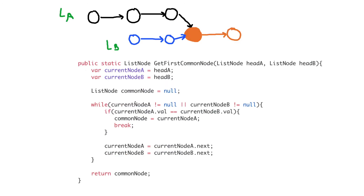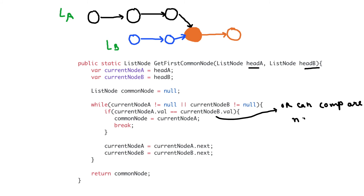Finally, in the function getFirstCommonNode, we provide the head nodes of both linked lists, traverse them at the same time, and check whether each pair of nodes is equal. Here we compare the node itself rather than just the value, and return that particular intersecting node or the common node.